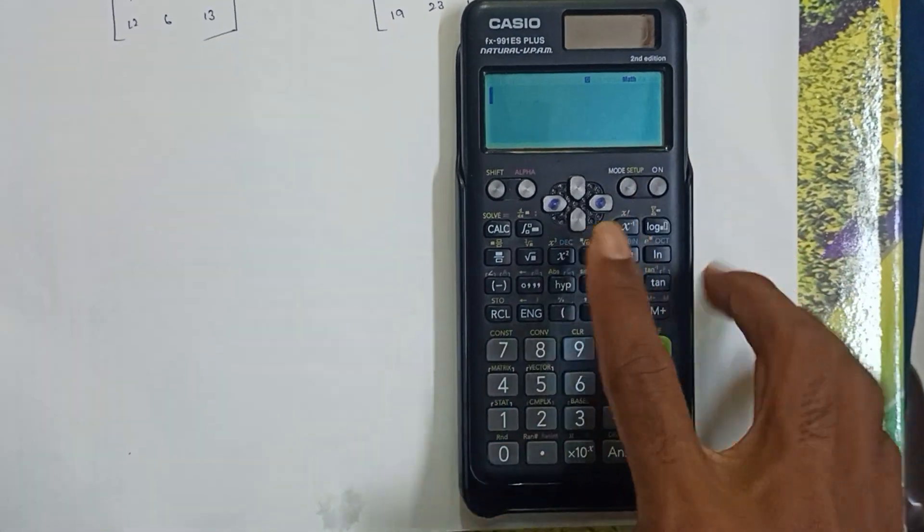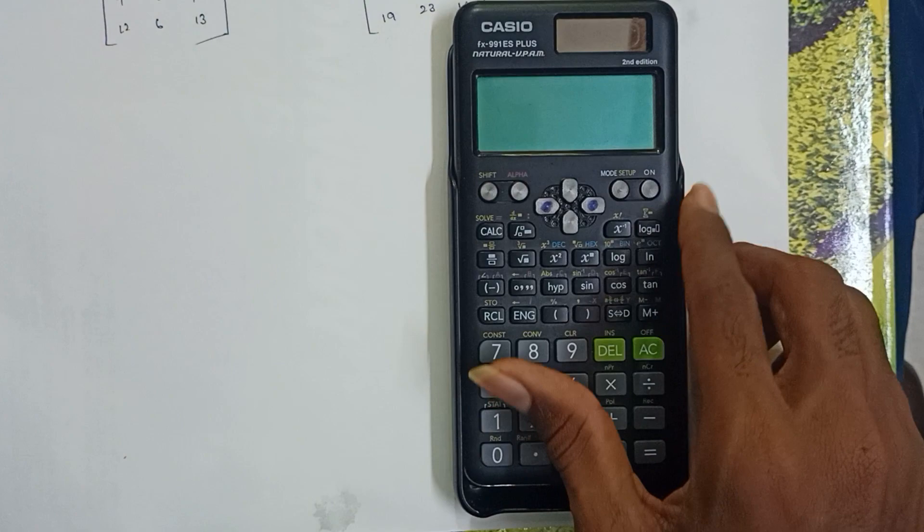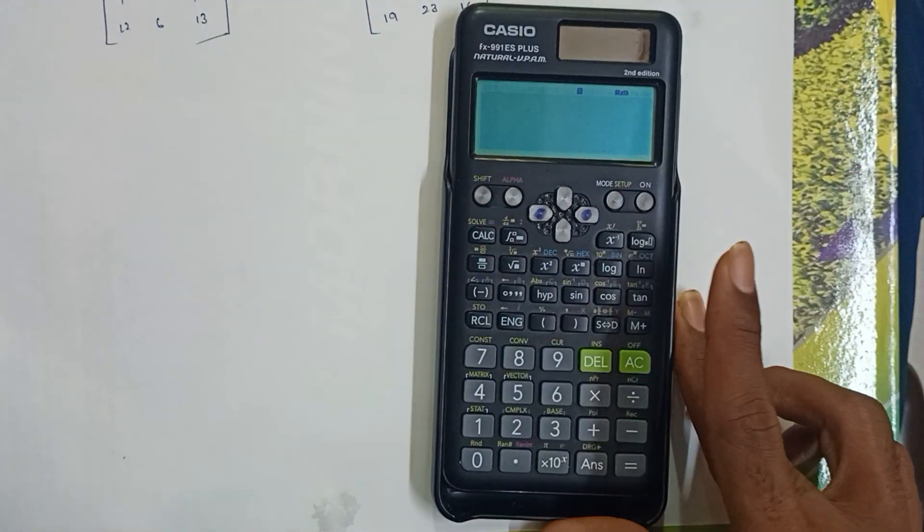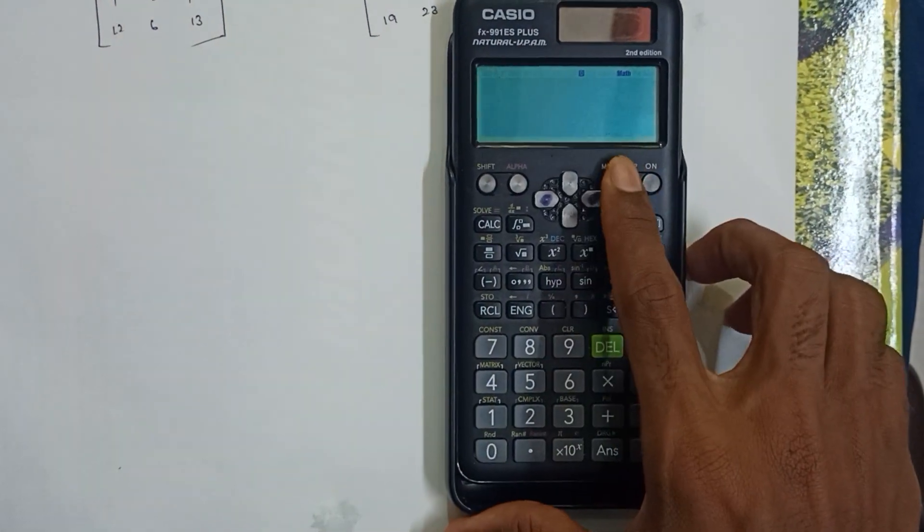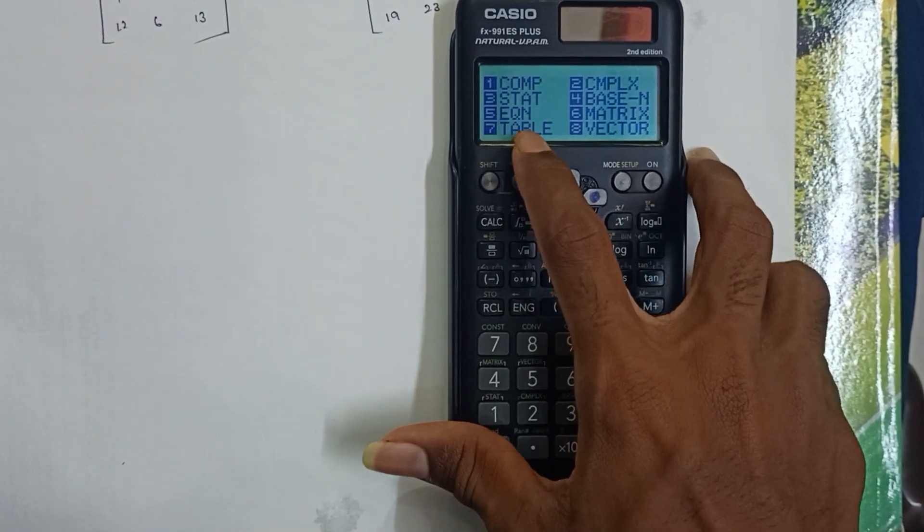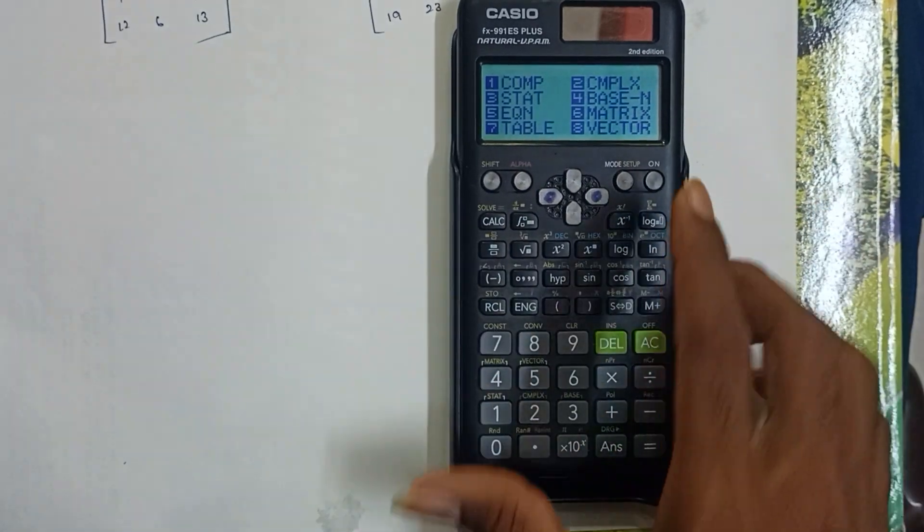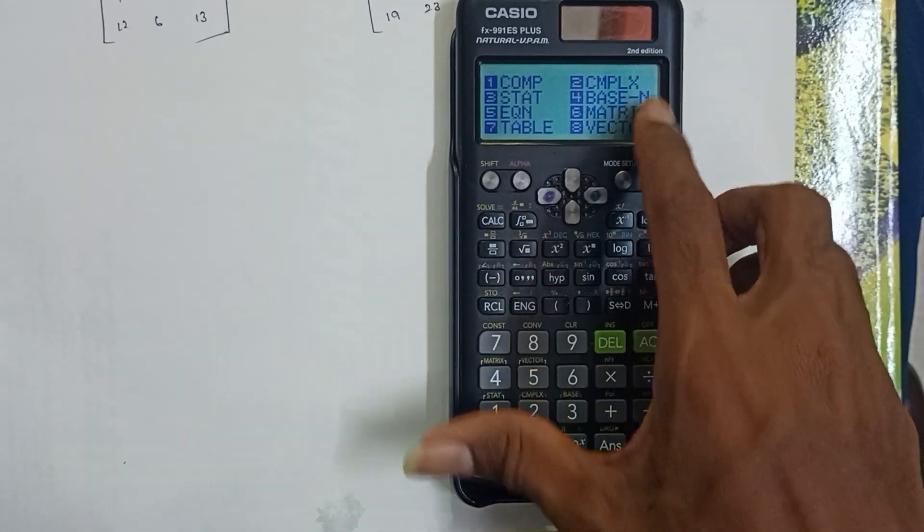First, to turn on the calculator, press Shift plus AC. Now it's on. For the mode setup, we need to access the equation mode. The matrix option is the 6th option, so I'll press 6.